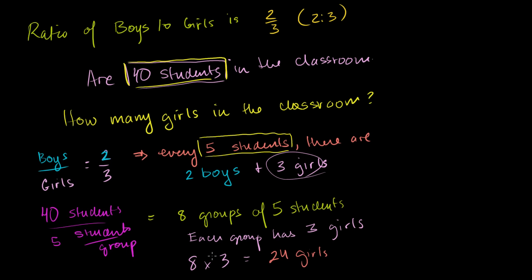You could find the number of boys the same way: 8 groups times 2 boys per group gives 16 boys. Or: 40 students minus 24 girls equals 16 boys. A quick method: 2 plus 3 is 5, so for every 5 students there are 2 boys and 3 girls. 40 divided by 5 is 8 groups; 8 times 3 equals 24 girls.